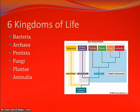Moving on to the six kingdoms of life: bacteria, archaea, protista, fungi, plantae, and animalia. As we can see in this graphic representation, bacteria and archaea are also called eubacteria and archaebacteria, and those terms are interchangeable.